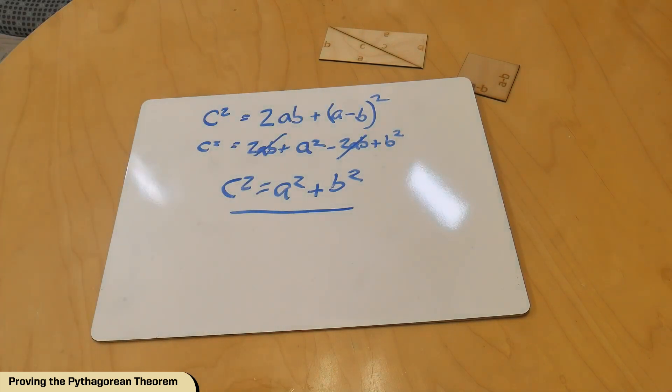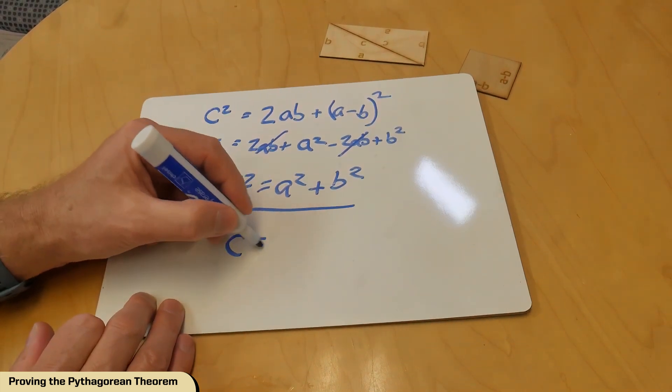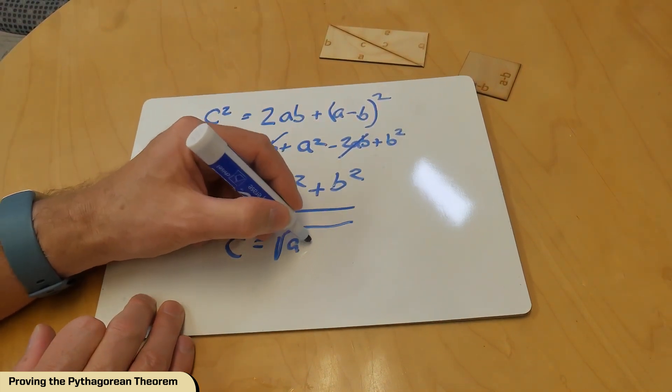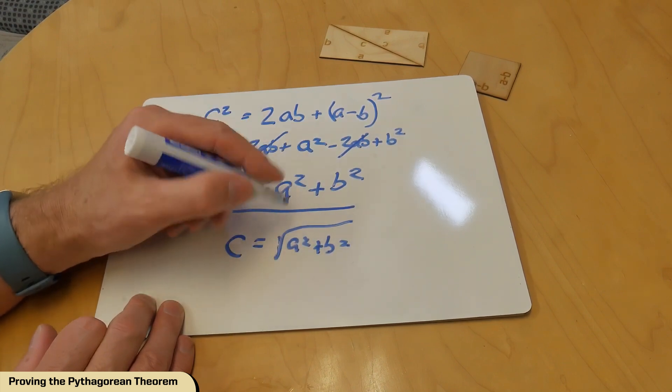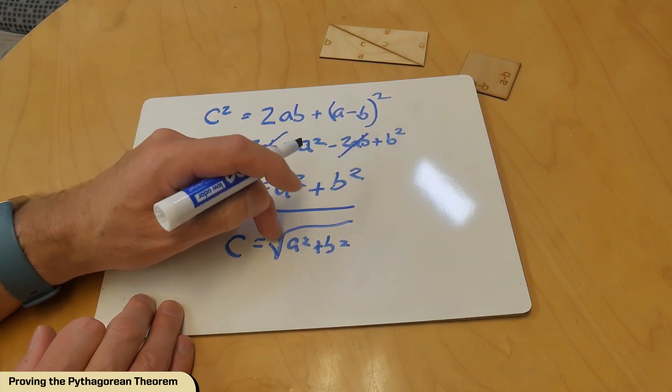Son of a gun. That's the Pythagorean theorem. If you want, you can write it out this way. That works too. But that's the Pythagorean theorem.